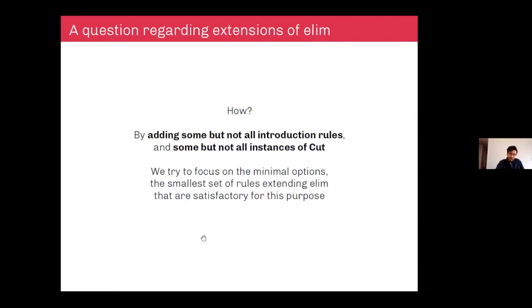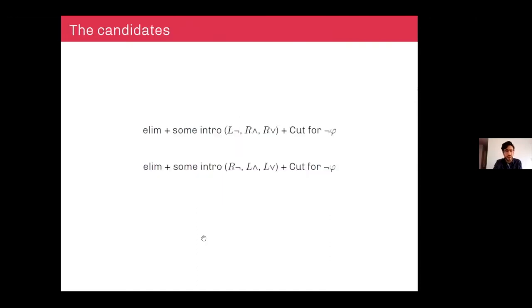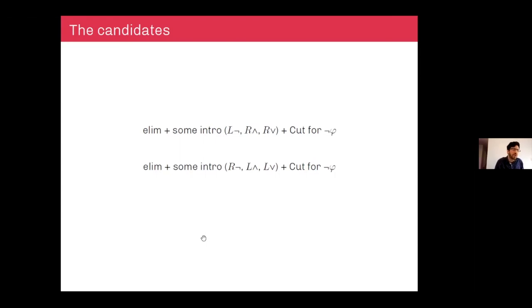We're going to show at least two candidates, consisting of adding some introduction rules — not all — and some instances of cut but not all. Two options we'll discuss: (1) all the elimination rules, the left introduction rule for negation, right introduction rules for conjunction and disjunction, and cut for negations; (2) the perfectly dual set — all elimination rules, the right introduction rule for negation, left introduction rules for conjunction and disjunction, and cut for negation.